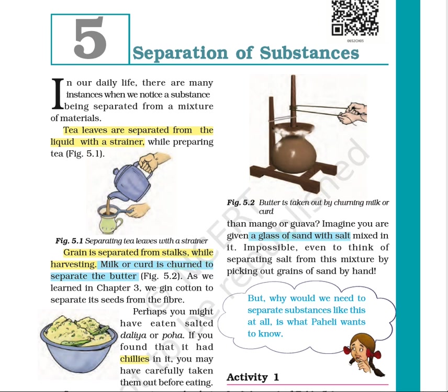Milk or curd is churned to make butter. Looking at figure 5.2, we can see butter being taken out by churning milk or curd. Butter is an example of fat, so milk or curd is churned to separate the fat from them.